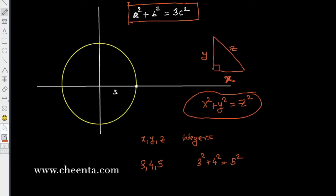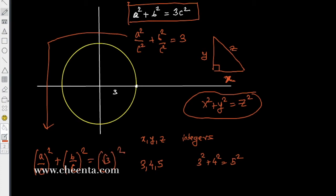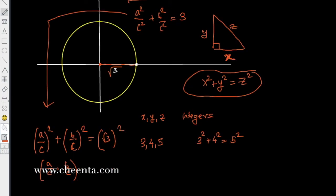Why don't you divide that by c² all along? So a²/c² + b²/c² equals 3. This is basically (a/c)² + (b/c)² = 3. So if we have a circle with a square root of 3 radius, then this particular point (a/c, b/c) will be a point on this circle.